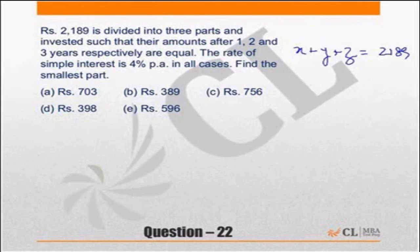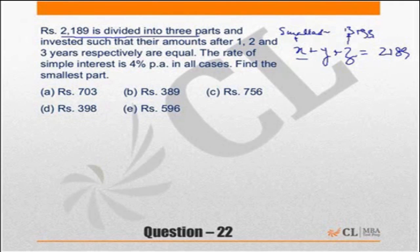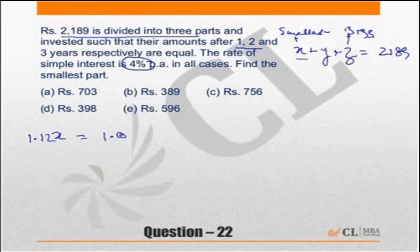Now the question says that they are invested such that the amounts after 1, 2 and 3 years are equal. So the smallest part, increased by 3 years by 4% is nothing but, in 3 years you get 12%. So it will become 1.12x. The middle part after 2 years will be 1.08y. And the biggest part after 1 year will be 1.04z.